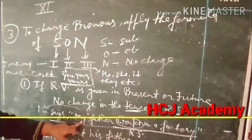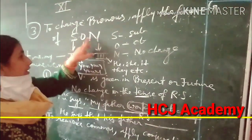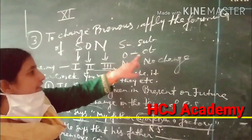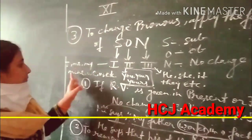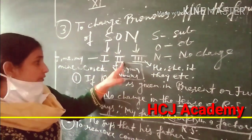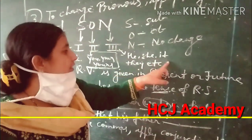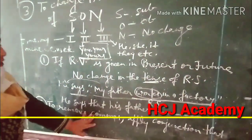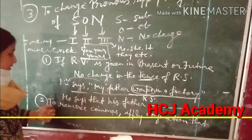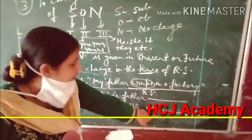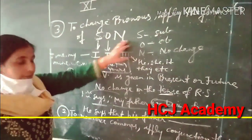To change pronouns, apply the formula of S-O-N: S stands for subject, O stands for object, N for no change. First person: I, me, my, mine, we, us. Second person: you, your, yours. Third person: he, she, it, they, etc. These rules are clear. Rule 1: if reported verb is in present or future, no change. Rule 2: remove commas, apply conjunction 'that'. Rule 3: change pronouns using the S-O-N formula.